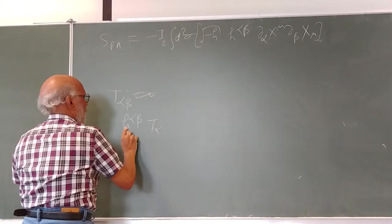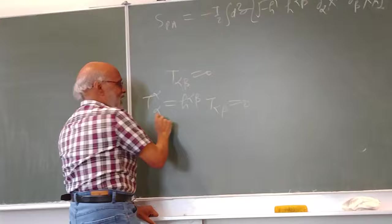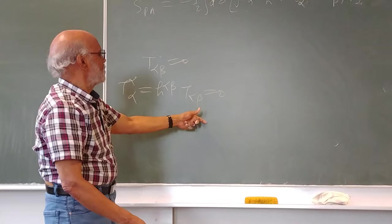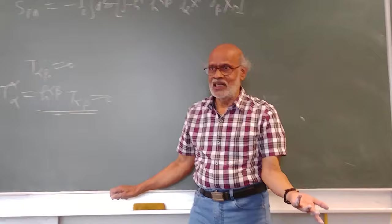That would be the trace of T_αβ. This is the sum of the diagonal elements. This is the metric on the worldsheet, so h_αβ times T_αβ.